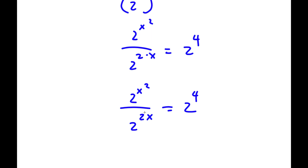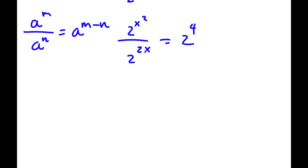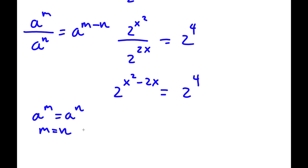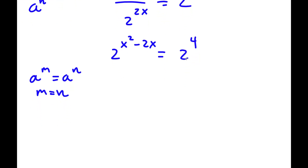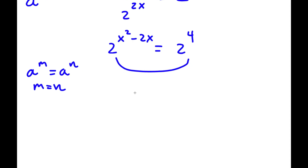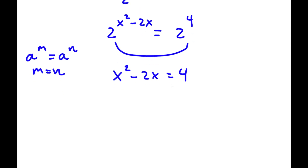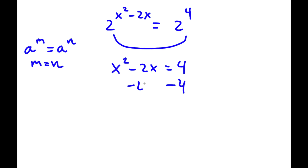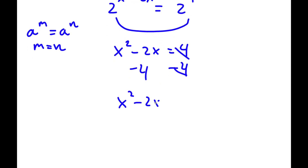So first off, if I have something in the form a to the power of m over a to the power of n, this equals a to the power of m minus n. So 2 to the power of x squared over 2 to the power of 2x equals 2 to the power of x squared minus 2x. This equals 2 to the power of 4. Since a to the power of m equals a to the power of n means m equals n, and both bases are the same, I have x squared minus 2x equals 4. Subtracting 4 from both sides gives x squared minus 2x minus 4 equals 0.